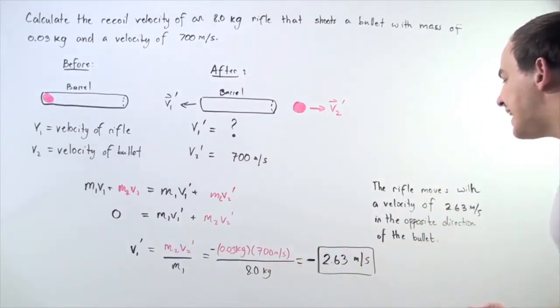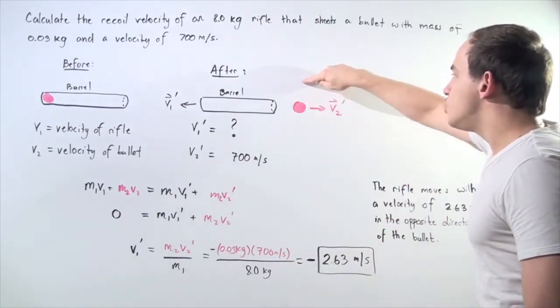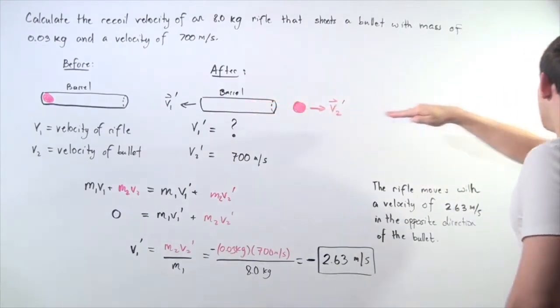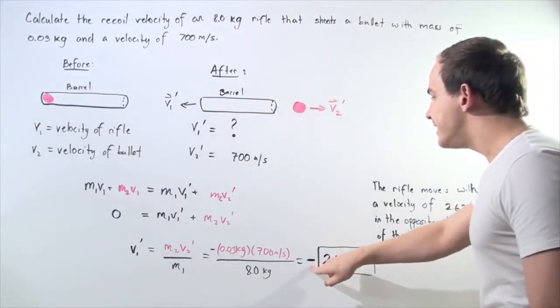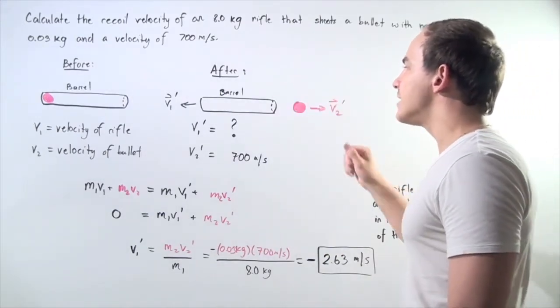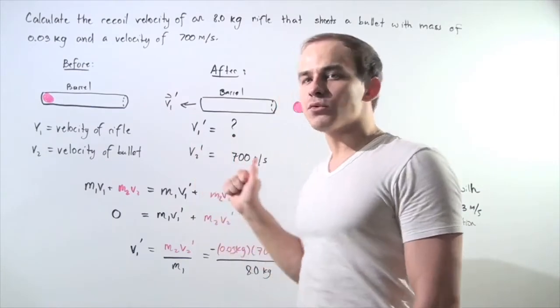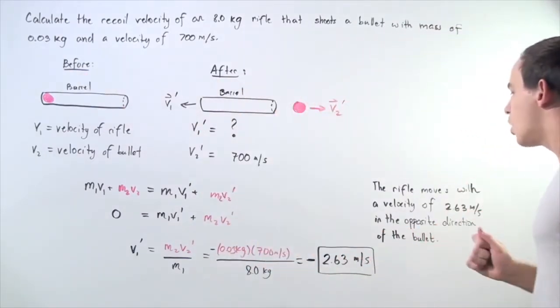We get negative 2.63 meters per second. The negative simply means that if we choose this direction along the positive x-axis to be positive, then the velocity of the barrel, the recoil velocity, points in the opposite direction of the bullet. So it points in the negative direction along the x-axis.